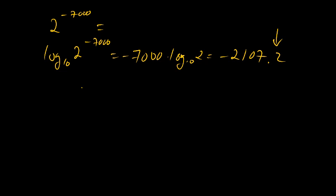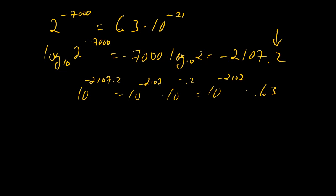Now the answer will be 10 to the negative 2,107.2, which is 10 to the negative 2,107 times 10 to the negative 0.2. And this is 10 to the negative 2,107 times about 0.63. So now our final answer is 6.3 times 10 to the negative 2,108.